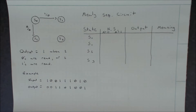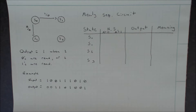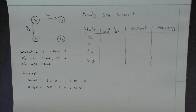Hello and welcome to the HKN sponsored video on solving sequential circuits. Today we're going to look at a Mealy sequential circuit. As a brief reminder, in a Mealy sequential circuit, both the inputs and the outputs are tied to the paths. This is in contrast to a Moore sequential circuit where the outputs are tied to the states and the inputs only are tied to the paths.